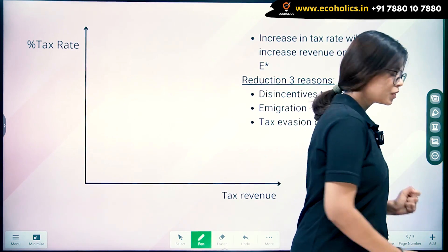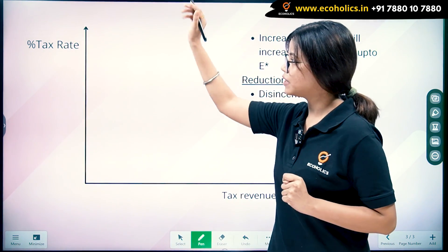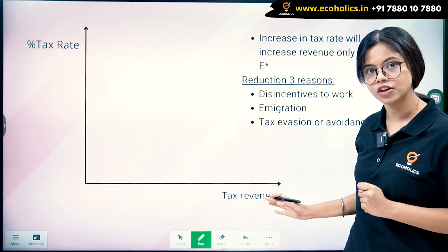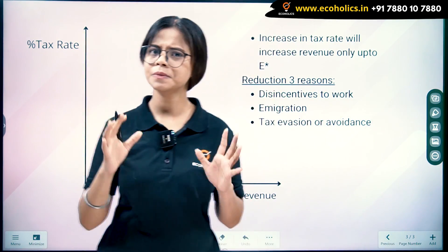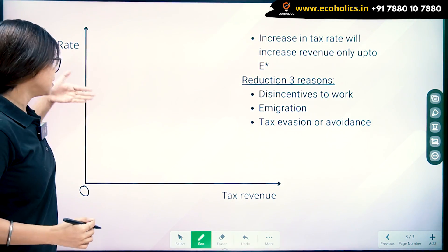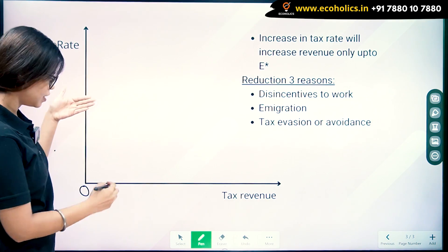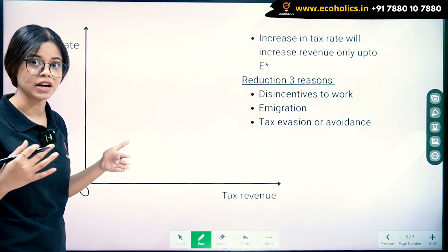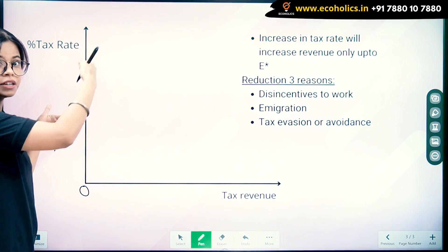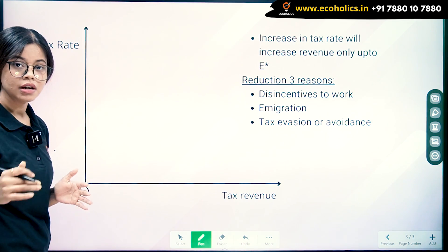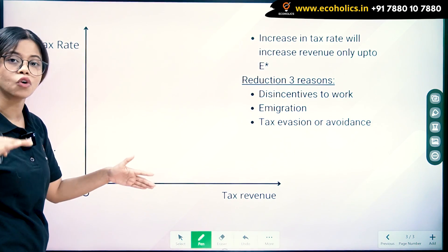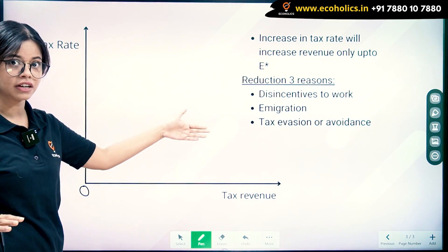Let's draw the curve. We have tax rate on the Y-axis and tax revenue on the X-axis. What the Laffer Curve says is: when we increase the tax rate, the tax revenue also rises — but you cannot keep increasing the tax rate indefinitely, because after a certain point the tax revenue starts to fall, and that happens due to three reasons.